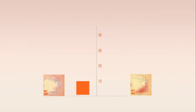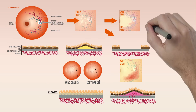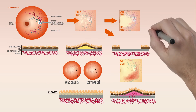Compared with dry AMD, vision loss in wet AMD occurs rapidly over the course of weeks or months rather than years. Unlike dry AMD, however, vision loss in wet AMD is treatable and reversible in some cases.